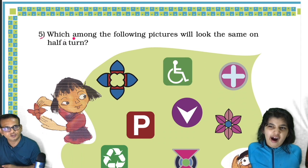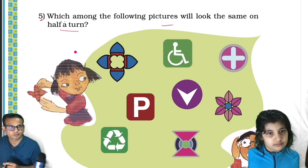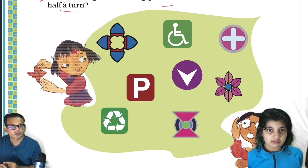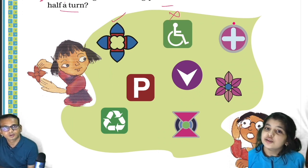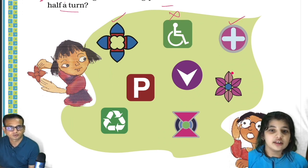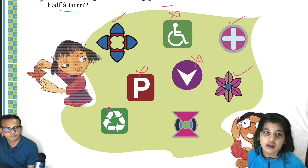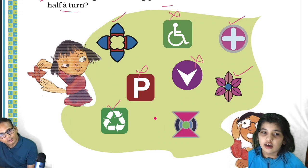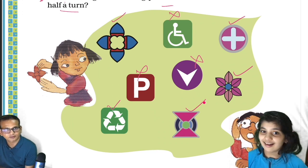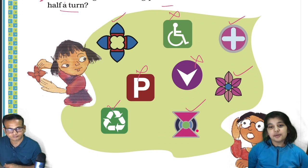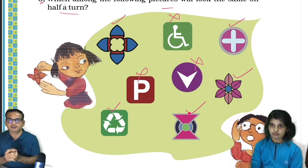Point five: which among the following pictures will look the same on half a turn? This picture would look the same — yes, right. This one wouldn't look the same. This one would. This would. This wouldn't. This one — yes. This wouldn't. This one — no. Let me think — okay. Yes, yes. Let's see if they would look the same. So we have completed page number 79!